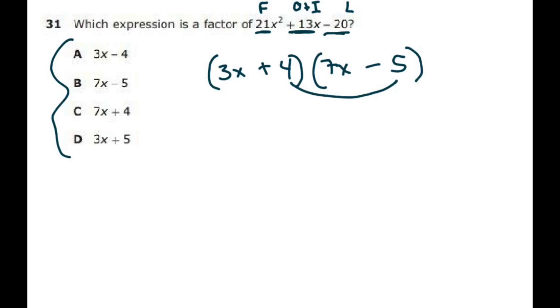So now I'm going to FOIL this out and see if I get it right. I know the first one works, that's your first, so that's 21x squared. And then your outer is minus 15x. Your inner is plus 28x. And then we already know the last. Goodness, we got lucky.